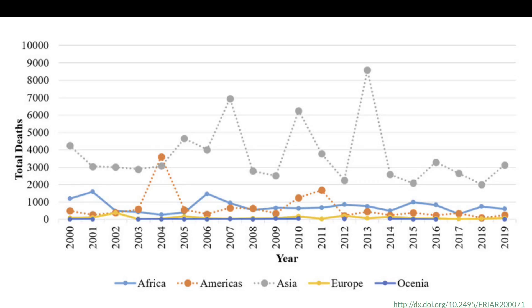This graph shows the total number of people killed by flooding events from 2000 to 2019 in different continents. You can clearly see that thousands of people are dying due to flooding events, mainly in Asia.